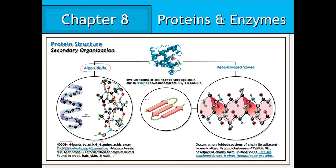The secondary structure known as the beta pleated sheet occurs when sections of a polypeptide chain fold back on themselves, allowing adjacent carboxyl and amino groups to hydrogen bond with one another. Unlike the alpha helix, the beta pleated sheet can resist tensional forces and thus is not as elastic, but it does provide flexibility to protein structure. It is not uncommon for a protein to exhibit both alpha helices and beta pleated sheets in its structure.